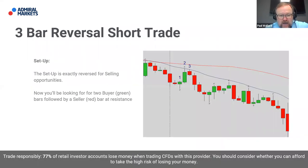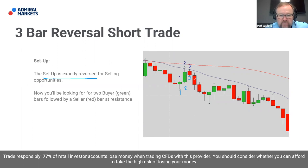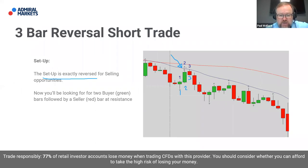For a short setup, it's exactly reversed. For a long opportunity, we were looking for price to be above the moving averages, to pull back, and then have two sellers followed by a buyer. Whereas for selling, we need price to be beneath the moving averages, and now we're looking for two buyer bars followed by a seller bar — a red bar at a period of resistance, whether that's dynamic resistance of the 20 period moving average or static resistance from a strong technical level on the chart.